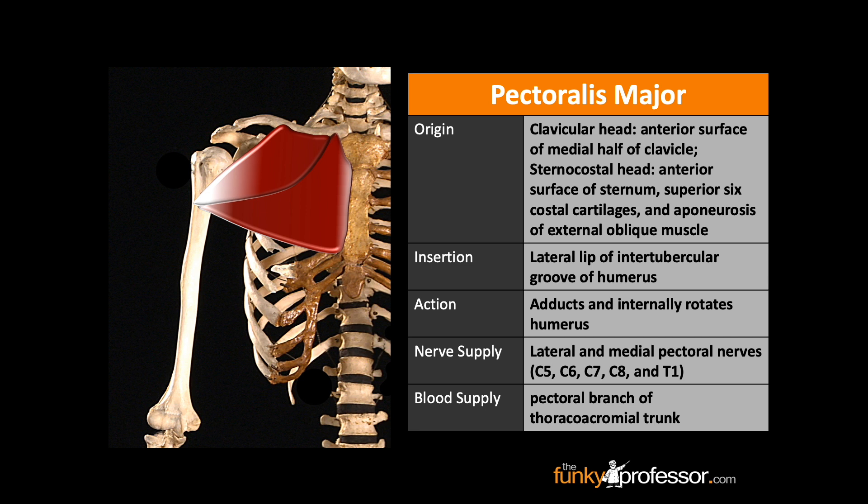The nerve supply to pectoralis major is from the lateral and medial pectoral nerves: C5, C6, C7, C8, and T1.